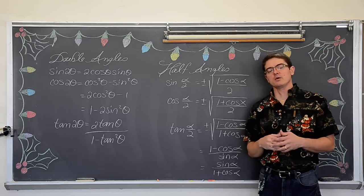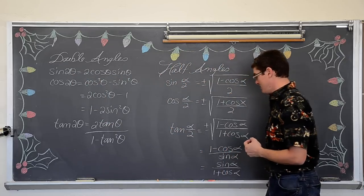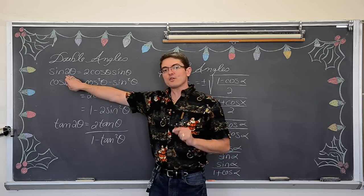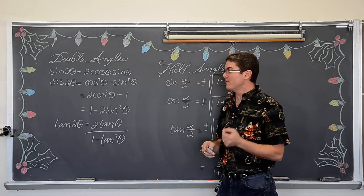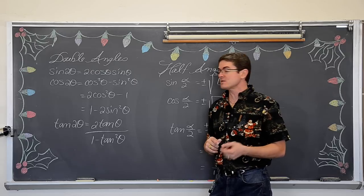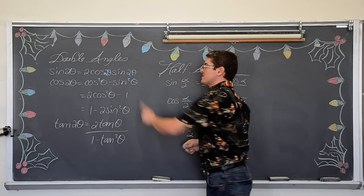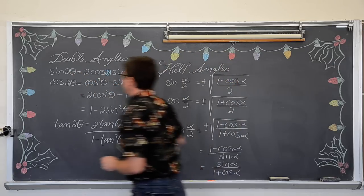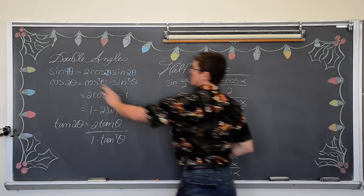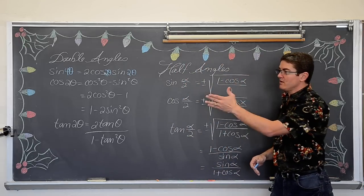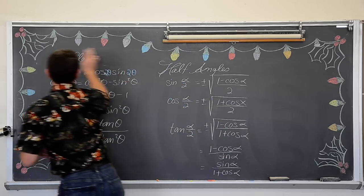Another thing — more important for proofs in a later video — don't get stuck on the idea that this is always one theta and two theta. What matters is the pattern: in the sine double angle identity, the angle on the left needs to be twice the size of the angles on the right. It is two times the cosine of an angle times the sine of that same angle, equal to the sine of an angle that is twice as big. So if theta becomes two theta, then the double angle becomes four theta. One angle is always twice the size of the other.